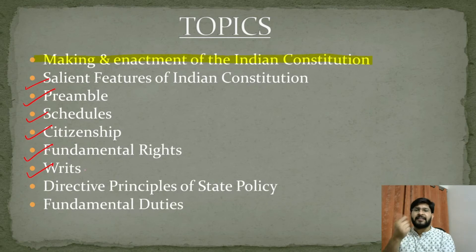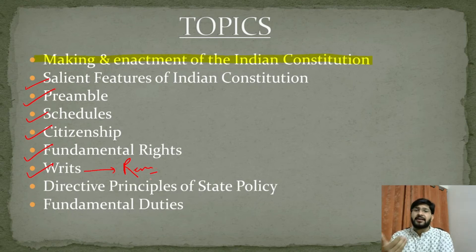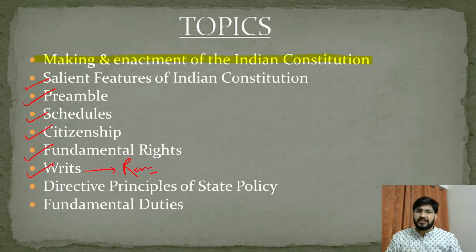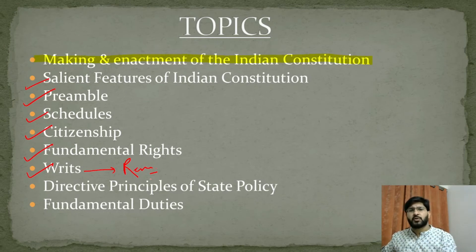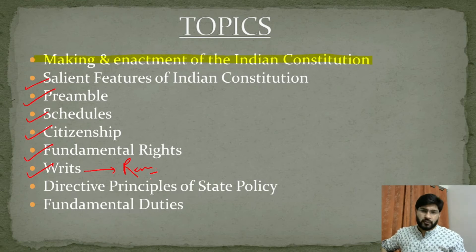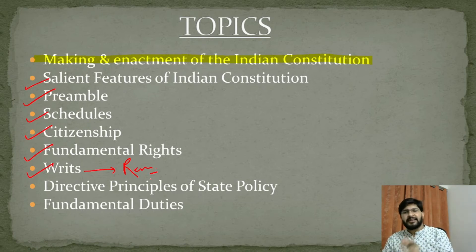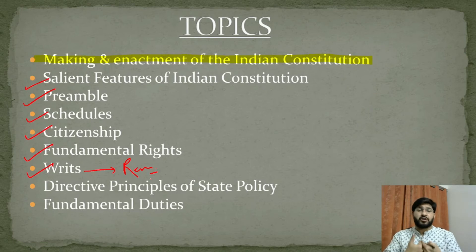Next are Writs. A writ means a remedy — a constitutional remedy for when your Fundamental Rights are violated. Under Article 32, the Right to Constitutional Remedies, you can directly approach the Supreme Court, which will issue writs to protect your Fundamental Rights. There are five types of writs: Habeas Corpus, Mandamus, Certiorari, Prohibition, and Quo Warranto. Each is issued under different conditions, which we study in detail.